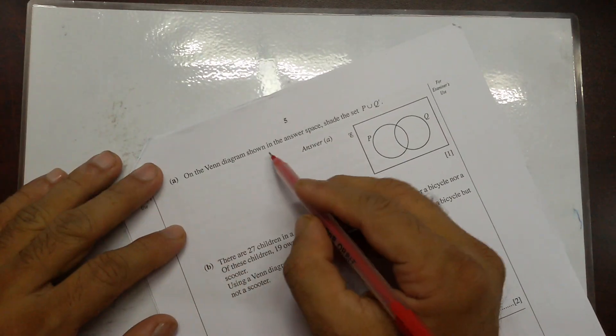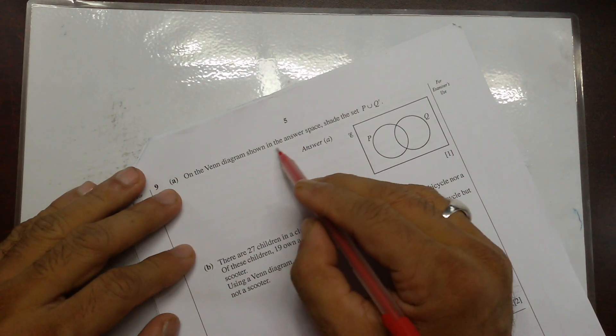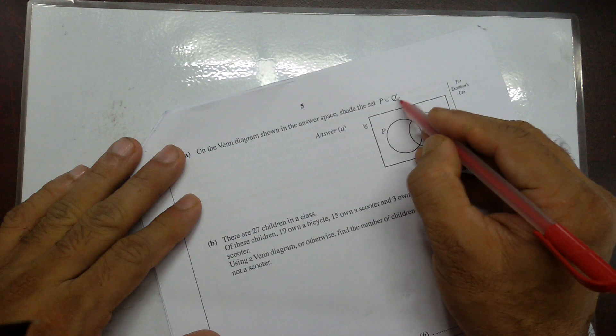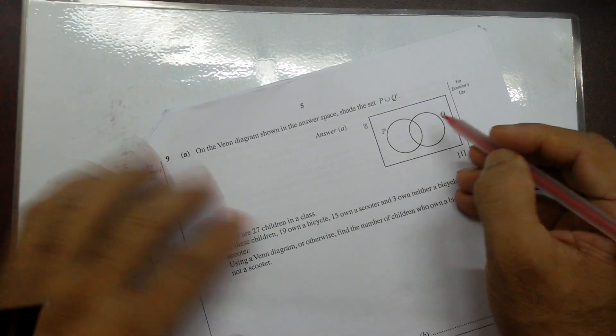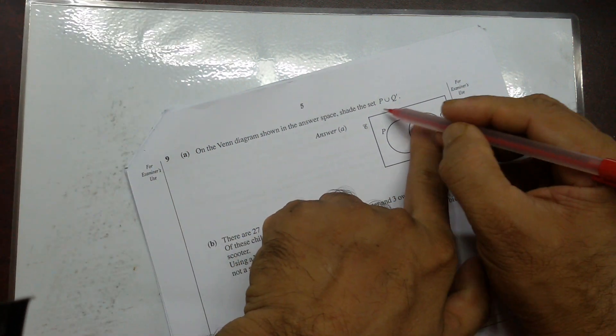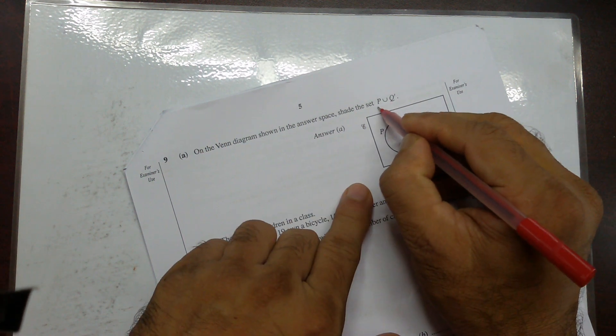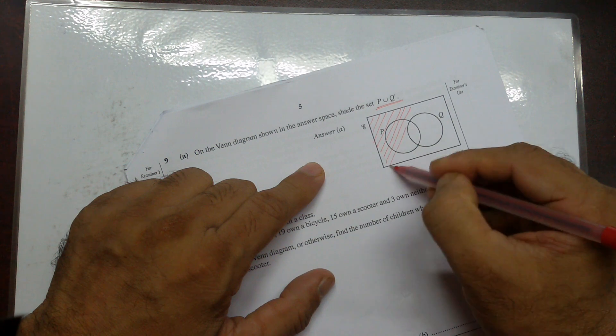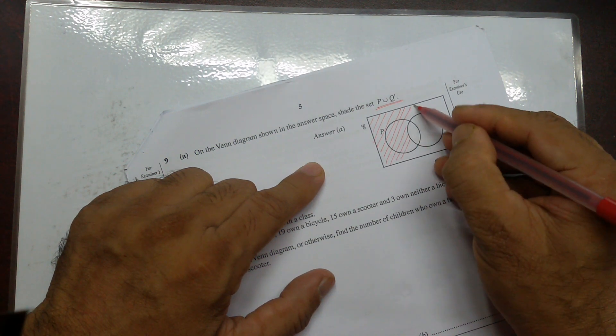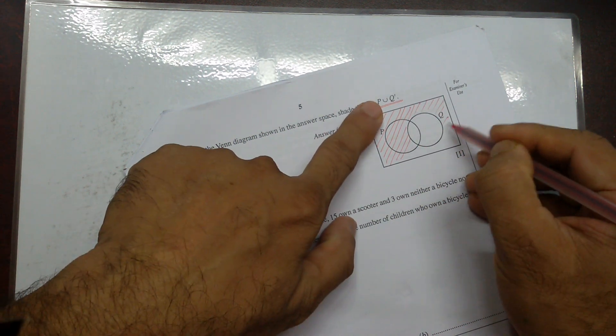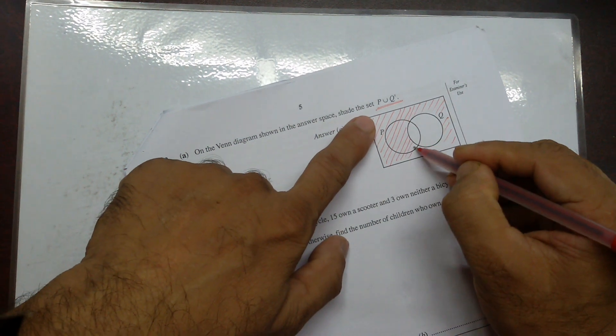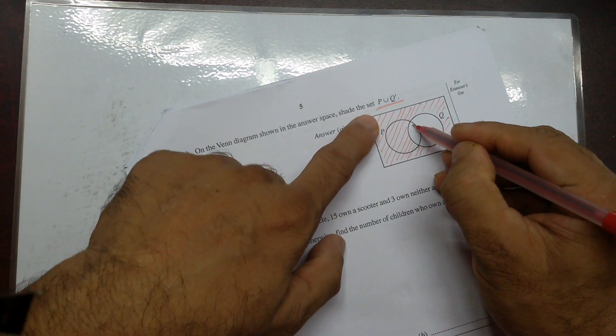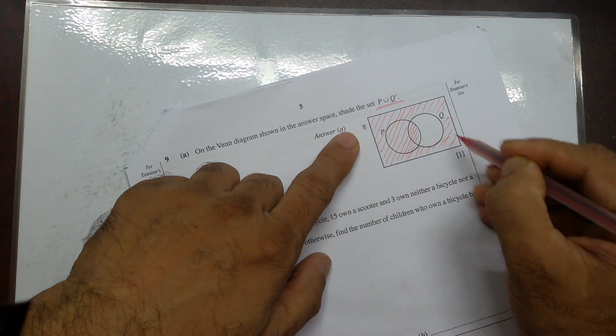Next question number 9. On the Venn diagram shown in the answer space, shade the set P union Q prime. So Q prime is here and P is over here. But remember it's union. So it should be something like that shade. That's P intersecting Q prime. But it's union, so I have to shade this part as well.